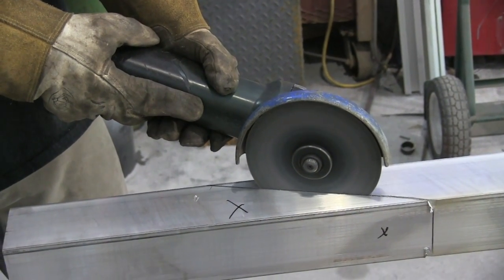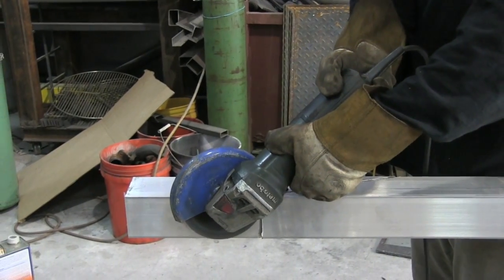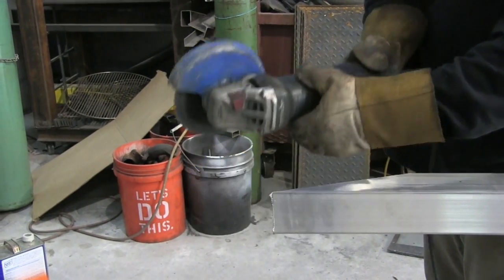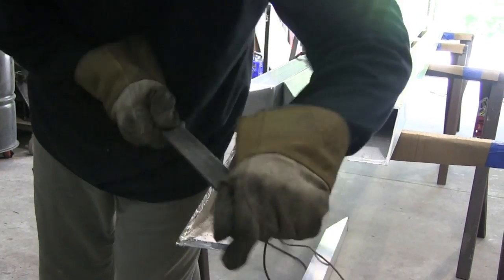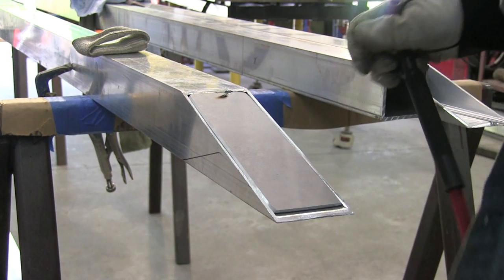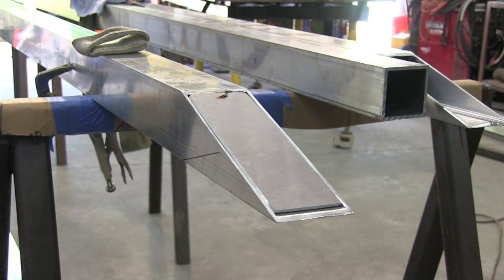Using a Metabo 6 inch here, this wheel is not designed for aluminum and it did grab quite a bit. Spraying some WD-40 or using some bar soap on a wheel like that helps a lot on aluminum. We're just using the proper wheel, probably the best thing.